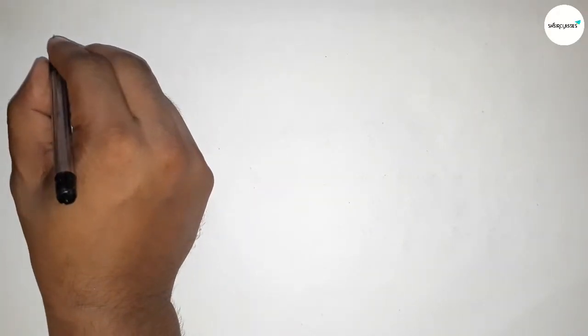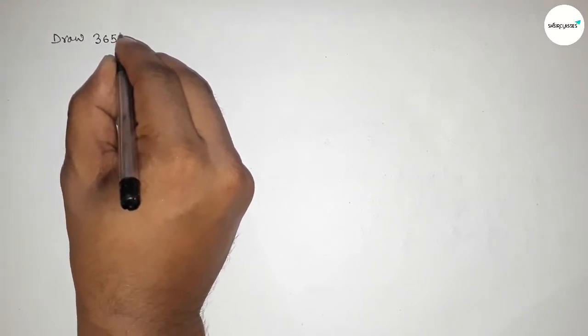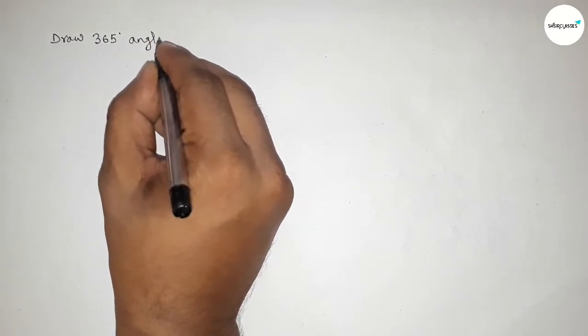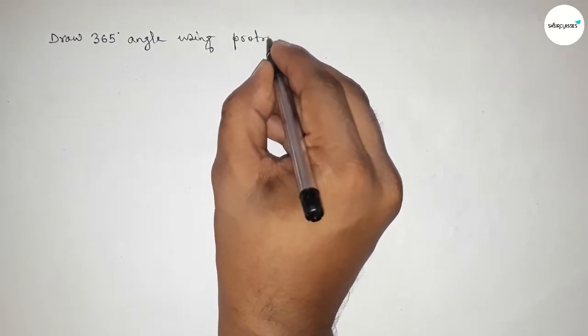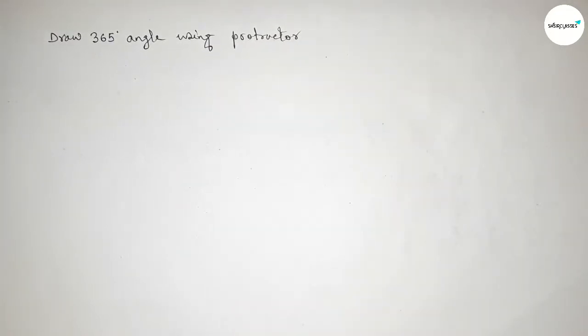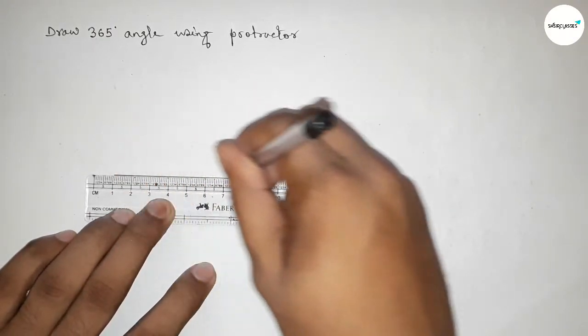Hi everyone, welcome to SISR classes. Today in this video we have to draw 365 degree angle by using protractor in easy way. So let's start the video. First of all we have to draw here a straight line of any length.